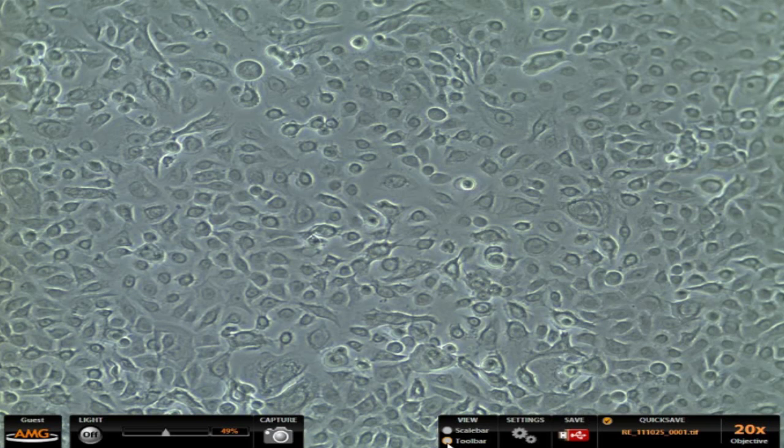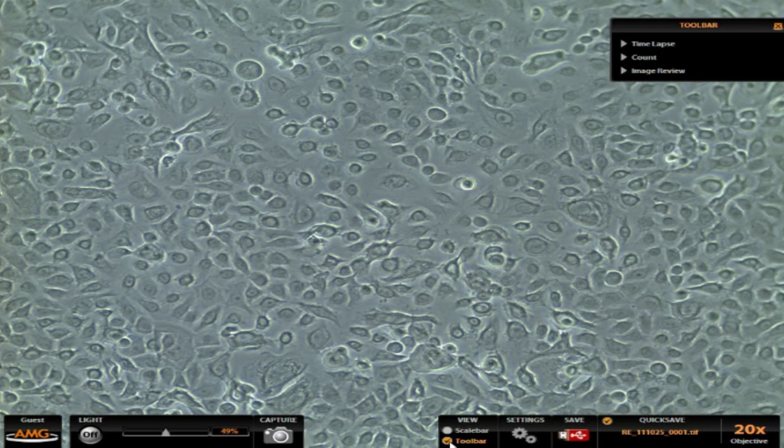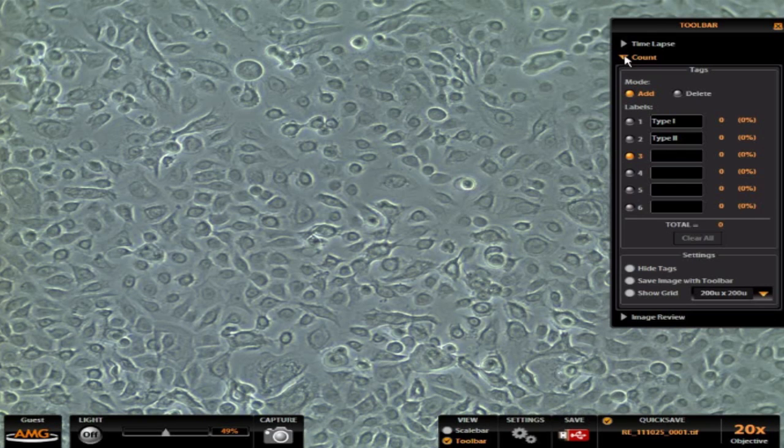To do that, I'm going to go over to the toolbar here. Turning on the toolbar opens up this little box and there's a count tool that I can expand. And inside that count tool, I've got up to six different categories that I can create and keep track of. And for this particular setting, I've got type 1 and type 2 cells predefined.